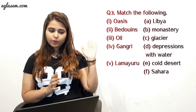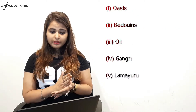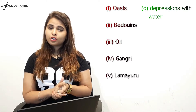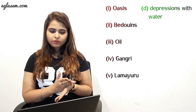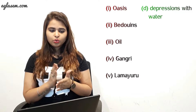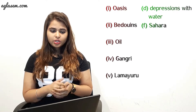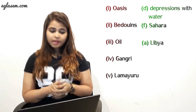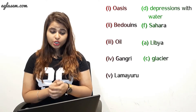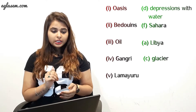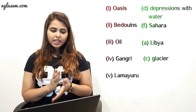The third question is: match the following. Oasis connects to D — depression of water. Bedouins connects to F — Sahara. Oil connects to A — Libya. Gangri connects to C — Glacier. Lamayuru connects to B — Monastery.